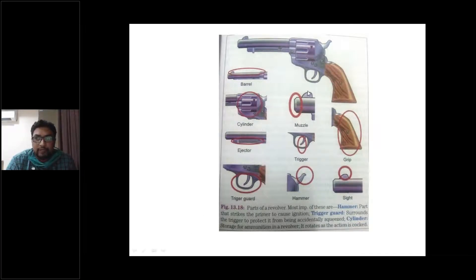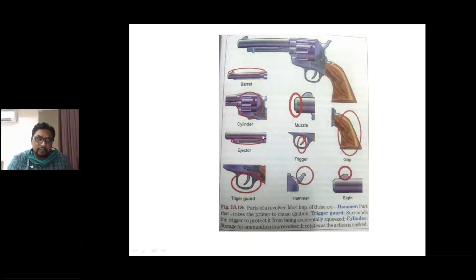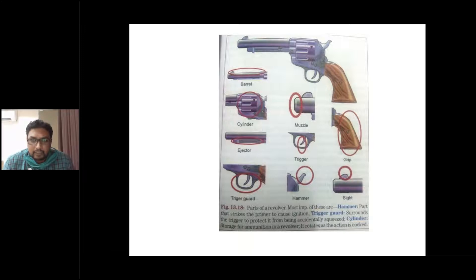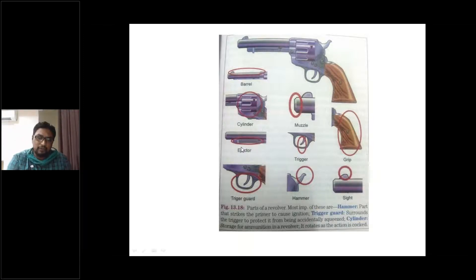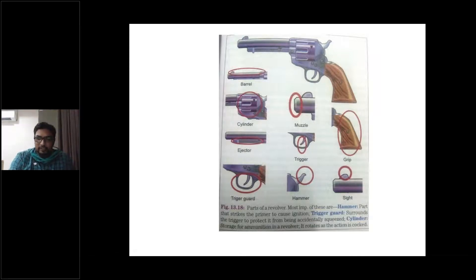The revolver has a barrel, cylinder, muzzle end, trigger, and trigger guard. The ejector allows the spent cartridge shell to be removed — pulling the ejector ejects the remnant shell. There is also a hammer and a sight for aiming at the target.